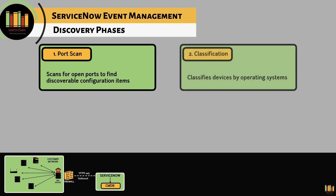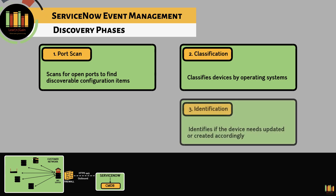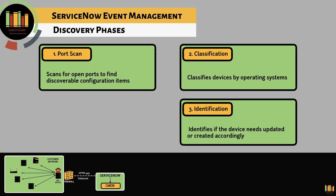Classification classifies devices by operating systems. Identification identifies if the device needs to be updated or created accordingly. Identification is primarily based on serial number and MAC address. Additional identifiers shall be leveraged as needed.